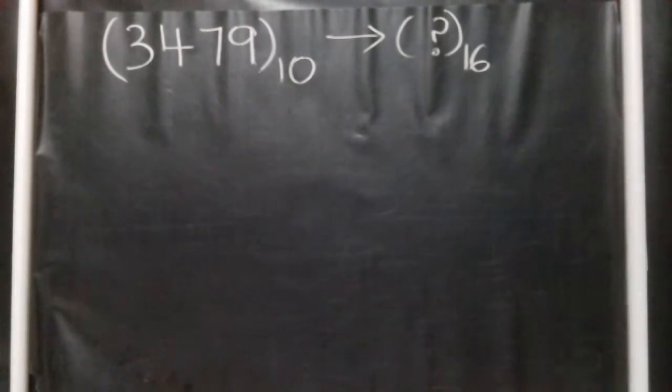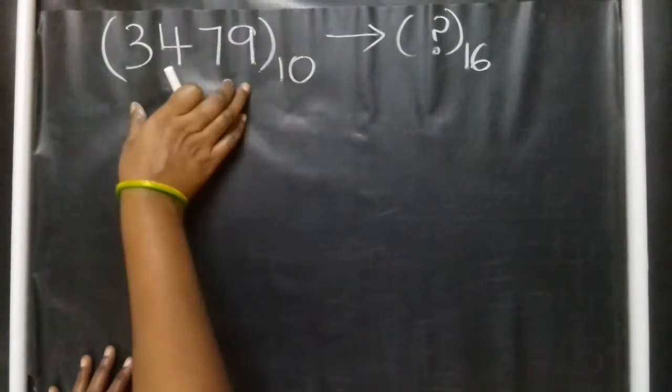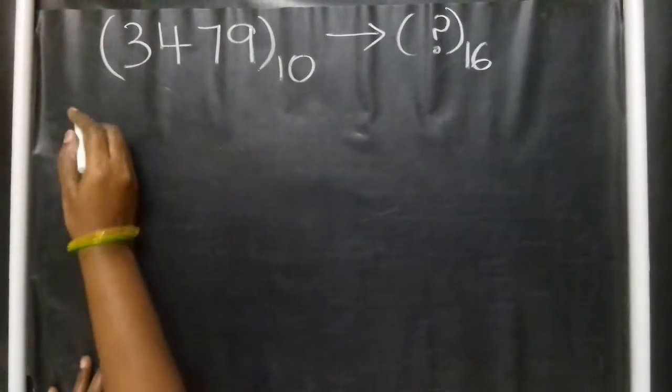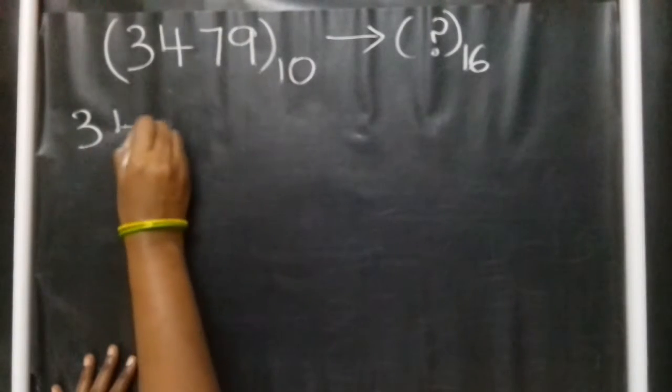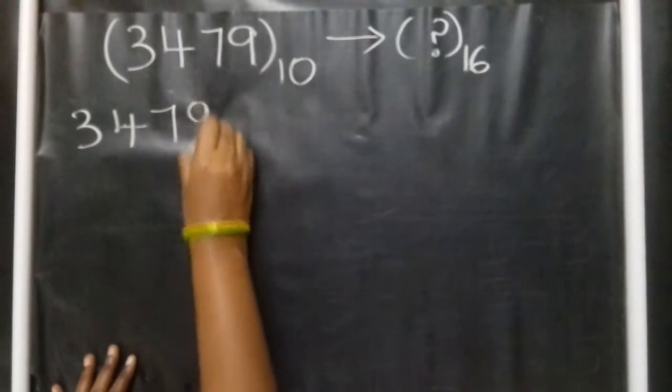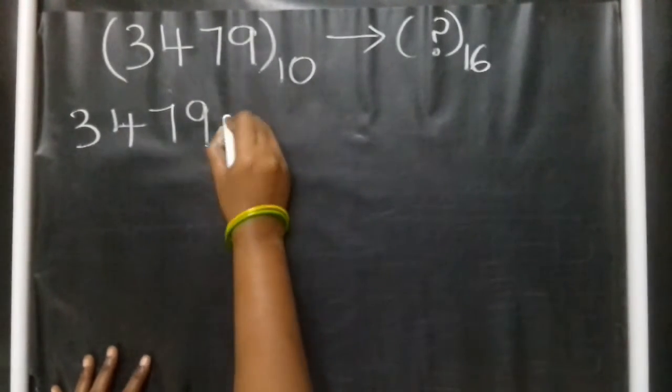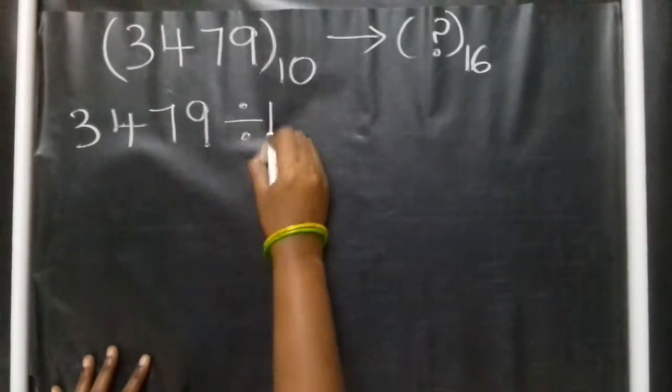If you have a number in base 10 system, to convert this decimal number to hexadecimal, take the decimal number 3479. To convert this to hexadecimal, divide by 16.